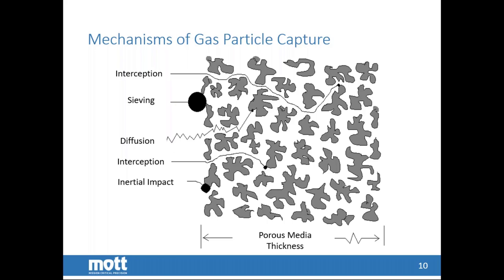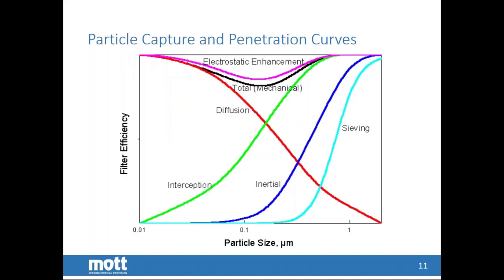The next larger particle size would be captured by inertial impaction. That means that the particle size is large enough so that it has enough mass and its inertia will cause it to flow out of the gas stream and impact the porous material. And of course, for the very large particles in gas filtration, sieving is also a mechanism. This graph shows the effect of particle size on filtration efficiency. The filter efficiency for diffusion is very high for small particle sizes and continues to trend downward as particle sizes increase. Whereas with sieving on the other end of the spectrum, it is very efficient at very large particle sizes and not as much in the smaller particle sizes.